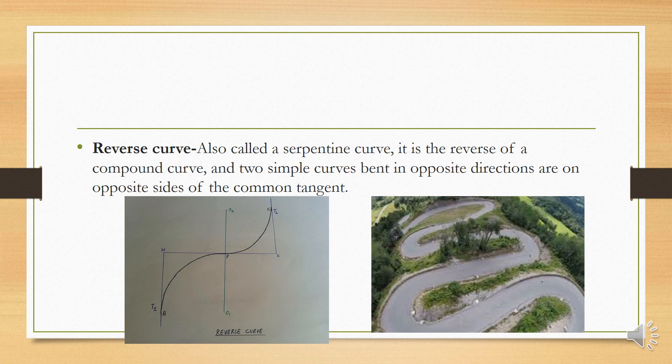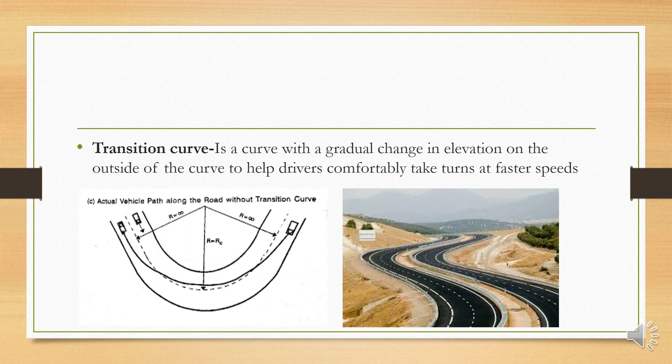Next is a transition curve. It is a curve with a gradual change in curvature to help drivers comfortably take a turn at faster speeds. It is often seen as part of a compound curve, providing a smooth entry into the main curve.